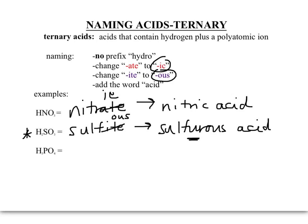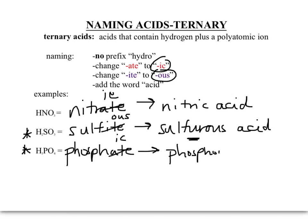In H3PO4, PO4 is phosphate. The '-ate' ending is changed to '-ic.' However, this is not 'phosphic acid' — this is another exception to the naming rules. This one is phosphoric acid instead of phosphic acid. Again, we've added in a couple of extra letters. Please know this exception as well.